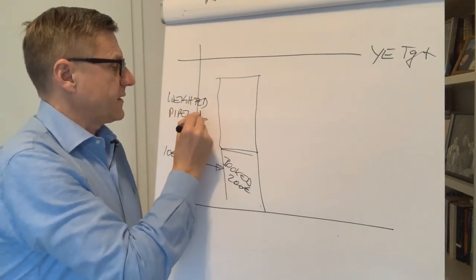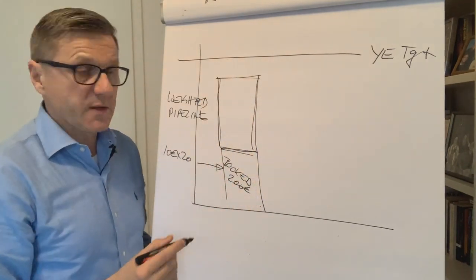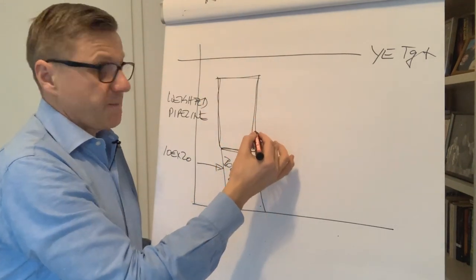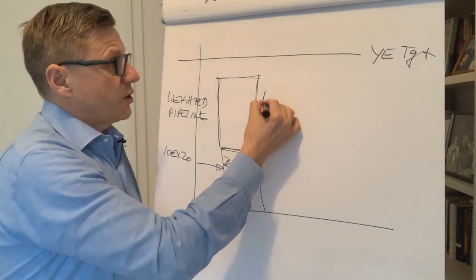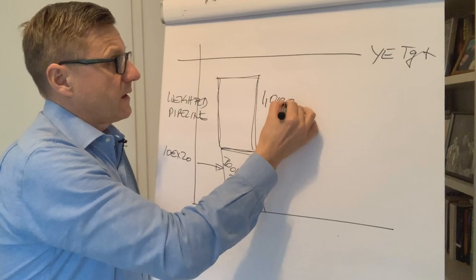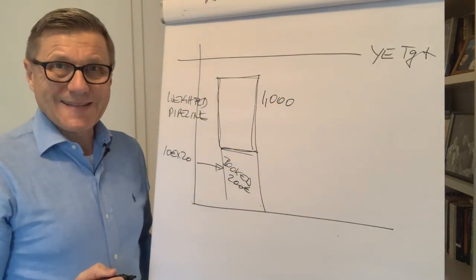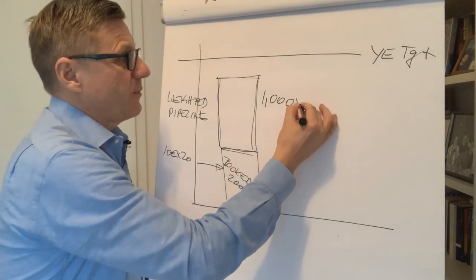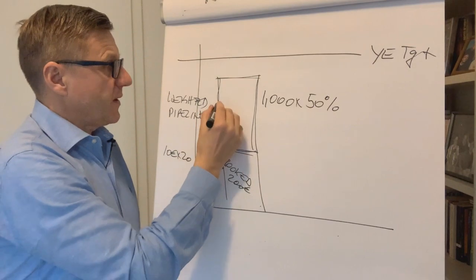If you have every deal with a certain value and a certain percentage, then the total of that is your weighted pipeline. That's the central part here, the weighted pipeline. That is what you still think you can sell.